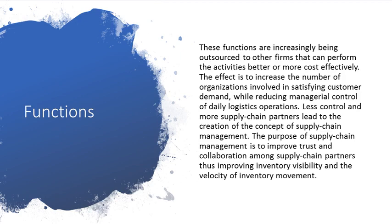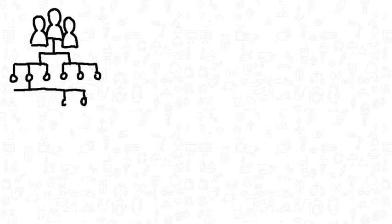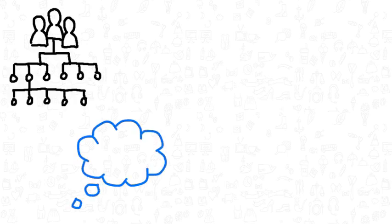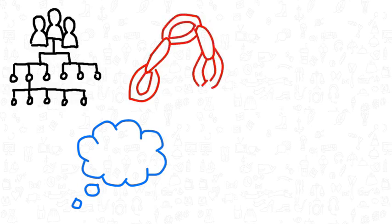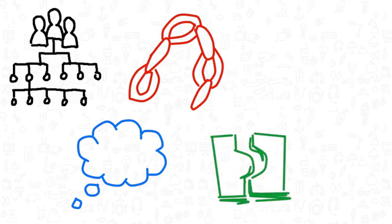The term supply chain management was first coined by Keith Oliver in 1982. The concept of supply chain management was of great importance long before the early 20th century, especially with the creation of the assembly line.